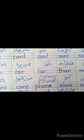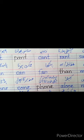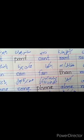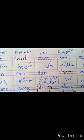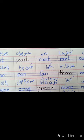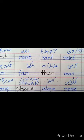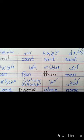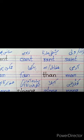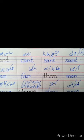Fourth one is 'than'. Than means بمقابلہ — ہم کہتے ہیں 'She is beautiful than you' — یہ آپ سے بہت زیادہ خوبصورت ہے. Fifth one is 'man' — M, A, N. دیکھیں A, N پہ ختم ہوتا ہے. Man means آدمی.